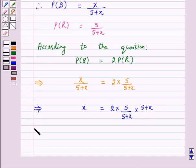This implies X is equal to 2 into 5, which is equal to 10.